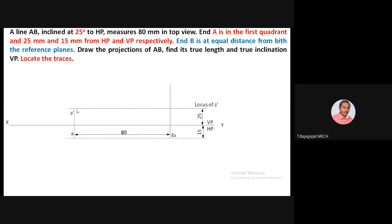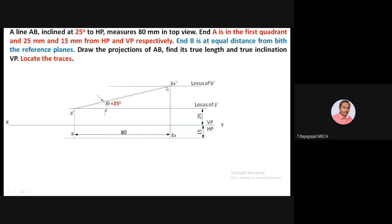With A-dash as center, mark 25 degrees using a protractor. The 25-degree inclination line will cut the projector and that point is marked B1-dash. Complete the line A-dash to B1-dash. Through B1-dash, draw the locus of B-dash parallel to XY. The true length is now completed using theta equal to 25 degrees.